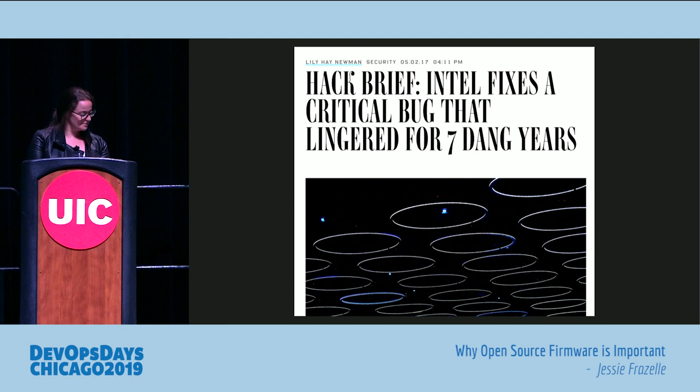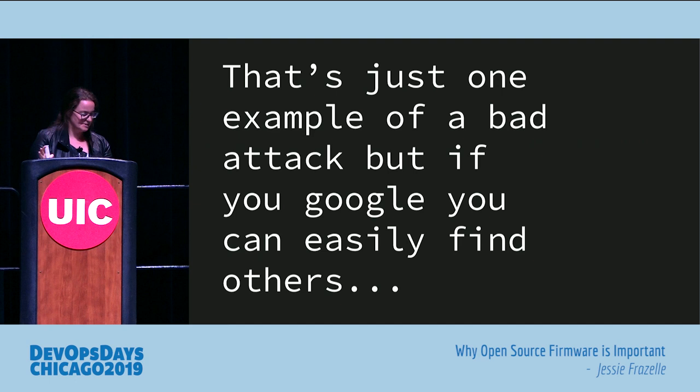In 2017 there was a critical bug in all Intel processors that happened because of this Minix layer — that's when it came out they were using Minix. There was a bug in the web server in Minix inside the Intel Management Engine. Why is that even there is a really good question. Why it's still there is an even better question.